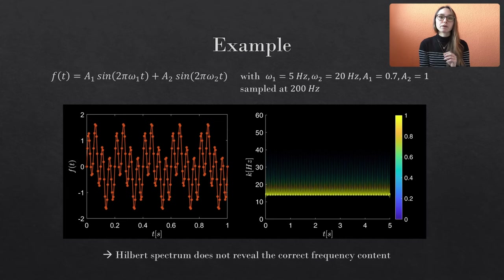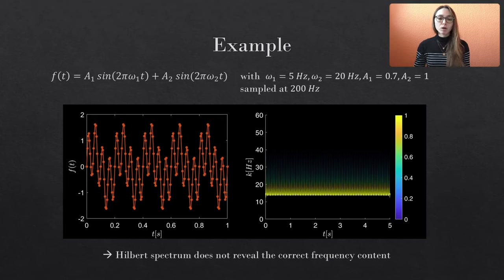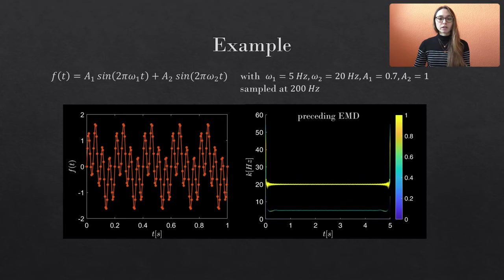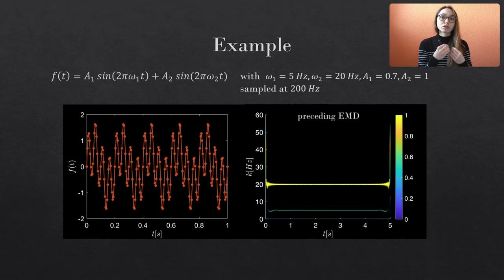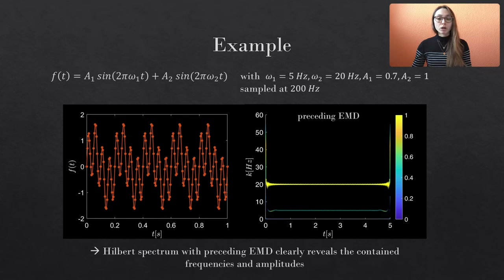But if we apply the empirical mode decomposition to the discrete data points and subsequently calculate the Hilbert spectrum, we obtain this result. Now we clearly see that 5 Hz and 20 Hz are continuously present in the data. In addition, we can also deduce the correct energy values — the squares of the amplitudes that scale the respective sine waves. We only have some irregularities near the boundaries, but they could be reduced with more advanced versions of the classical EMD.